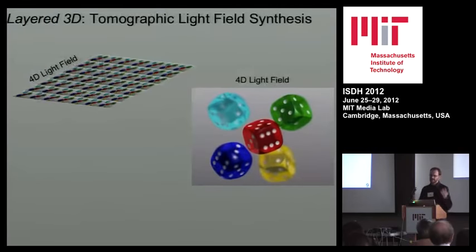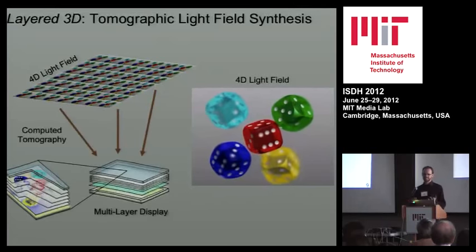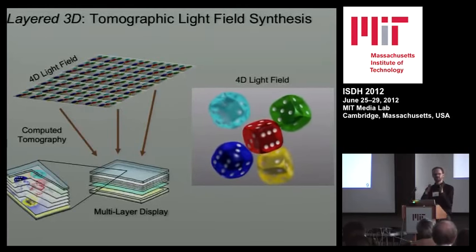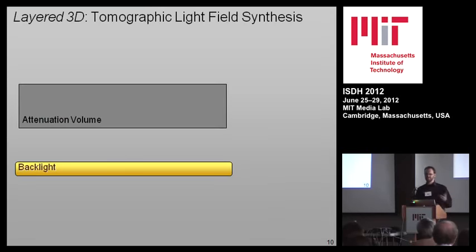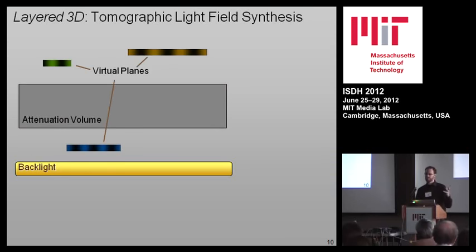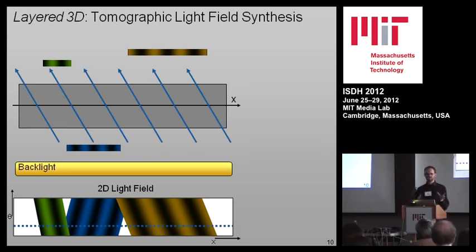We use a ray-based framework to analyze all of these things. We start with a four-dimensional light field data set, which you can conceptualize as a 2D grid of 2D images. We use a tomographic synthesis where we ask the computer: given a volume, can each projection through that volume in different directions match the corresponding view of the light field we want to reproduce? So for each ray cast through a programmable volume, the integral along that line should match the desired light field view.